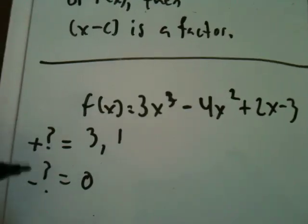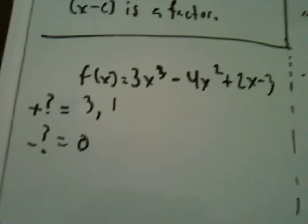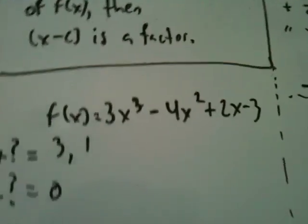So the Descartes' rule of signs gives you an idea of how many of each type there are, and where you should start testing.